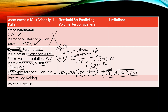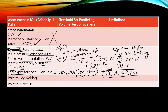What are the limitations of dynamic parameters? Number one, the patient needs to be in sinus rhythm. Number two, the patient must be completely passive with no respiratory effort. Number three, the patient should be receiving a tidal volume of 8 ml per kg ideal body weight — which is not possible in most ICU patients since we try to use lower tidal volumes. The patient should not have pulmonary hypertension or right ventricular dysfunction.